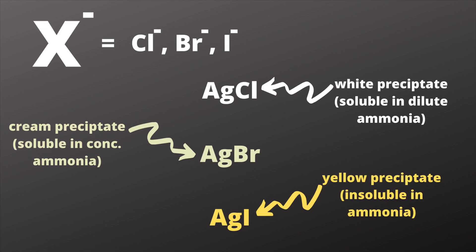And AgI formed when silver ions and iodide ions react is insoluble in any concentration of ammonia. So that makes it nice and easy to separate from the others.